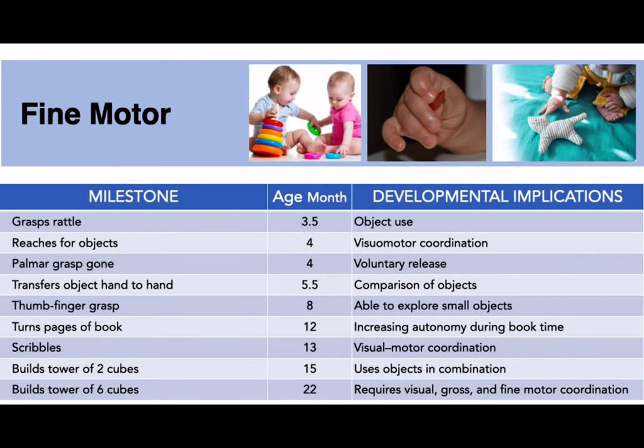For fine motor skills — movements using the hands and fingers — at three months the baby can grasp a rattle; at four months they can reach for objects and the palmar grasp disappears; at five months they can transfer an object from hand to hand; at eight months they begin to have the thumb-finger grasp; and at twelve months they can turn pages of a book.